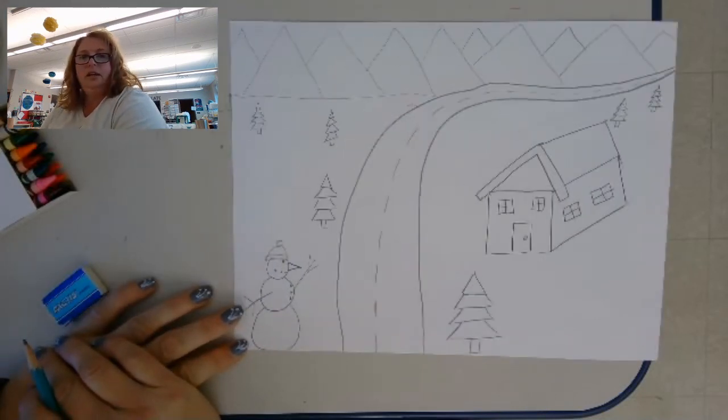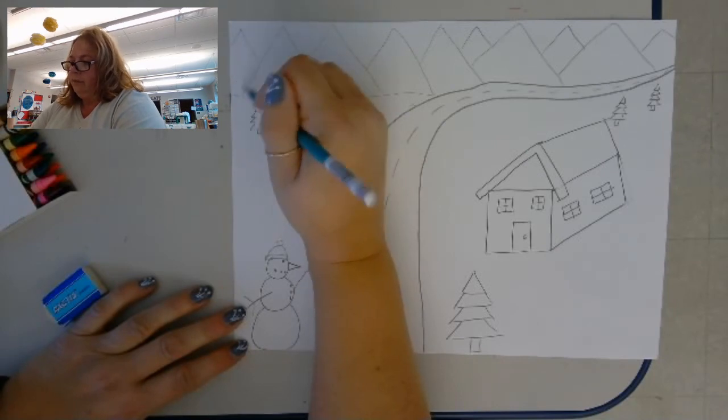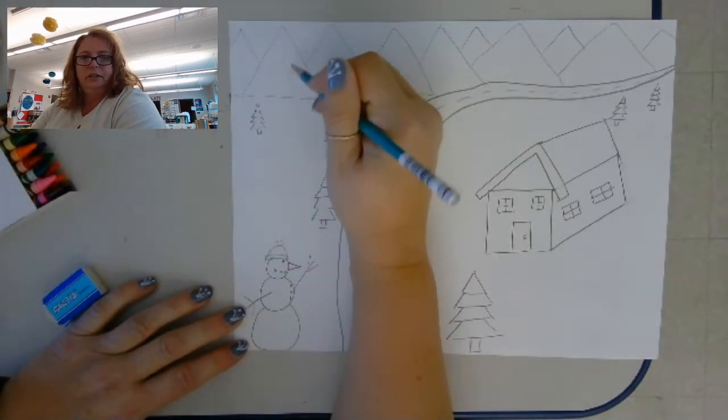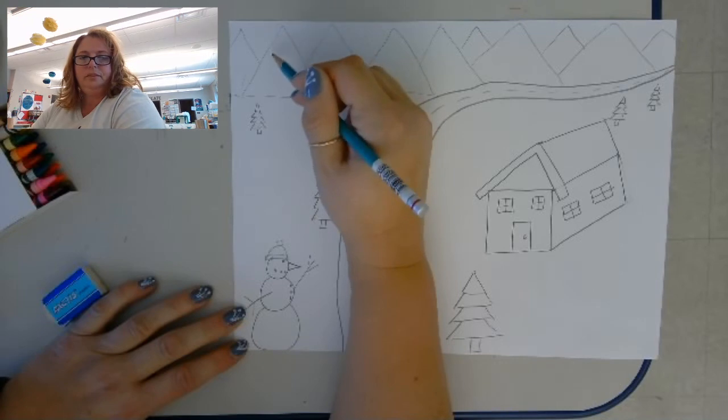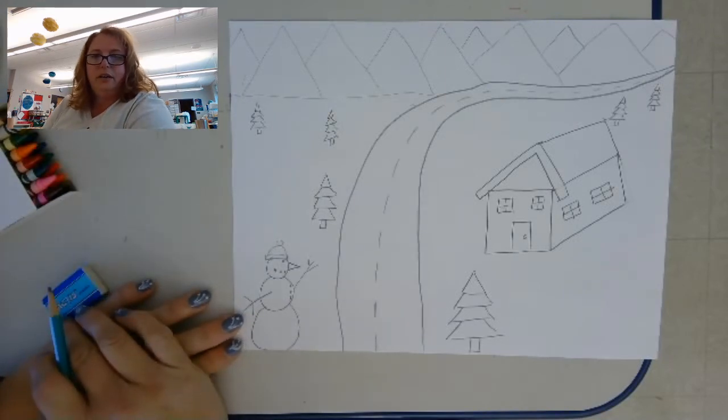And you can do the same with the mountains. You can color the bottom parts green or brown, and then you can leave the tops white to show that they're covered with snow also.